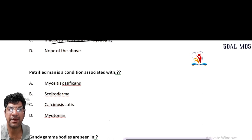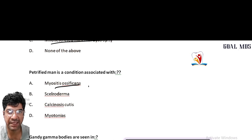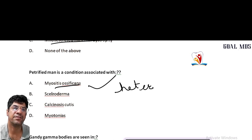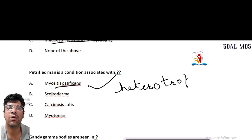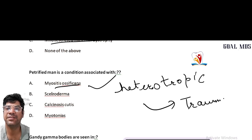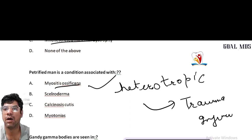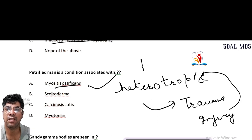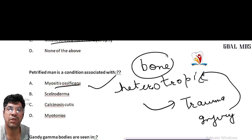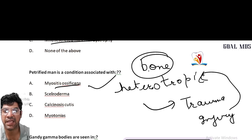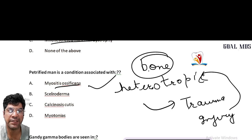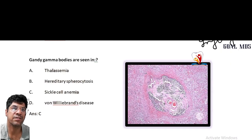Petrified man is a condition seen in myositis ossificans — formation of heterotopic bone. Whenever there is injury to a muscle, there will be formation of heterotopic bone within the muscle, leading to muscle stiffness, pain, and a limited range of motion. That is why it is known as the petrified man.